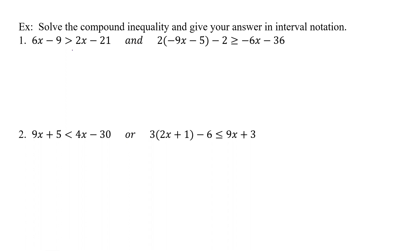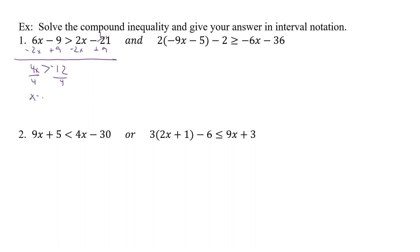All right, so let's do maybe two steps at once to kind of simplify. Let's subtract 2x and let's add 9. So we have 6 minus 2 is 4x, and then it's greater than. If you need to do your subtraction, that's going to be 9, 10, 11, 12 and it's going to be a negative. So now we divide by 4, so x is going to be greater than negative 3.